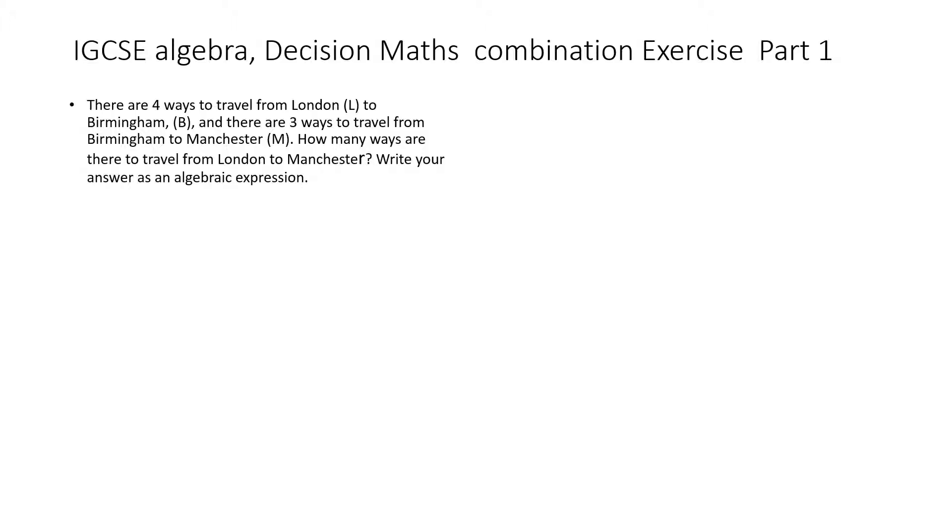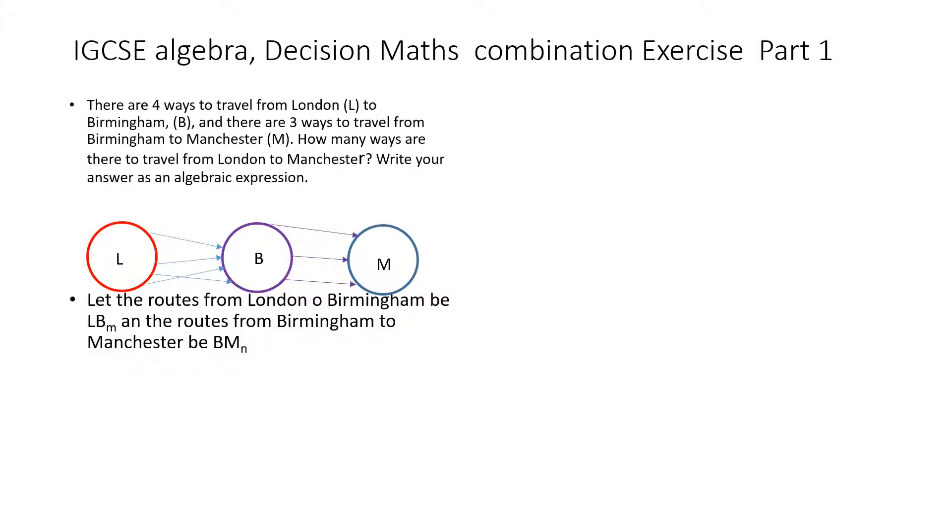What I've done here is present this in graphical terms. I've got London to Birmingham, Birmingham to Manchester. Let the routes from London to Birmingham be LB, and routes from Birmingham to Manchester be BM, where M is the number of routes from London to Birmingham and N is the number of routes from Birmingham to Manchester.